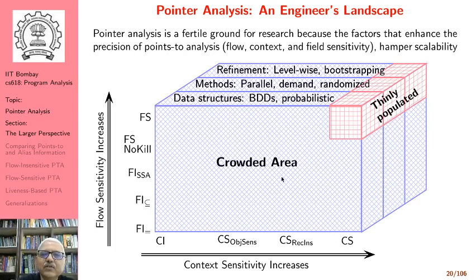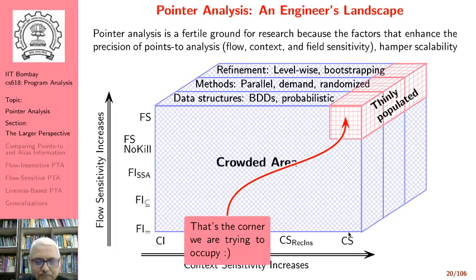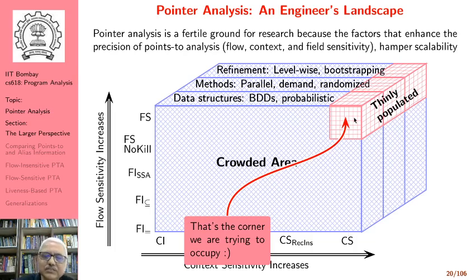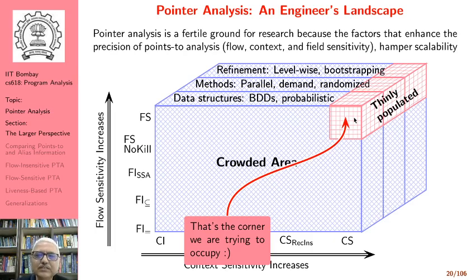This is a very crowded area. What is thinly populated is the corner where we talk about flow-sensitive and context-sensitive analysis, and that is the corner we are trying to occupy. I have been working on it for about a dozen years since 2008. Lots of interesting problems have been solved by my students, but more interesting problems remain and we are not there yet as far as scalability is concerned. I set a goal in 2008 of doing flow and context-sensitive analysis of a million lines of C code. So far we have reached about 158k lines and I am hoping that in another five or six years we might reach there.